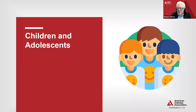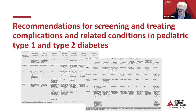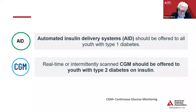Now I'm going to shift to some special populations. We'll start with children and adolescents. You'll find specific recommendations for the screening and treatment of complications and related conditions for both pediatric patients with type 1 or type 2 diabetes. Automated insulin delivery systems should be offered to all youth with type 1 diabetes, and either real-time or intermittent scanning CGM should be offered to youth with type 2 diabetes on insulin.